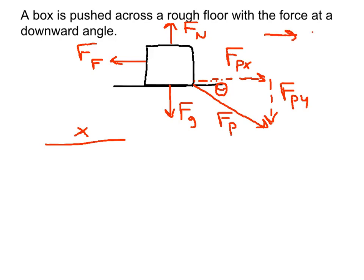Let's say there's an acceleration this way speeding up as we push. So we're going to say FPX minus FF equals MA. Because the direction of acceleration is the positive direction. Now FPX is going to be FP cosine theta minus FF equals MA. And we'd continue from there based on what we have.